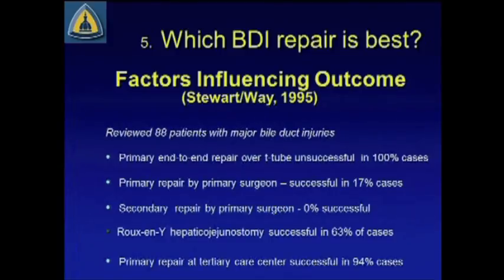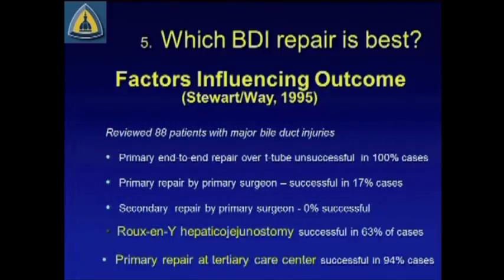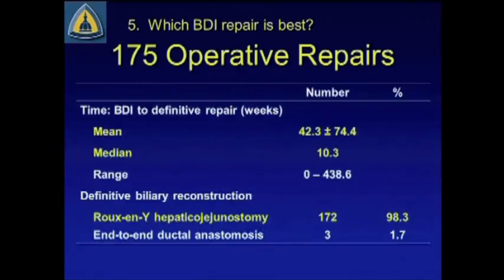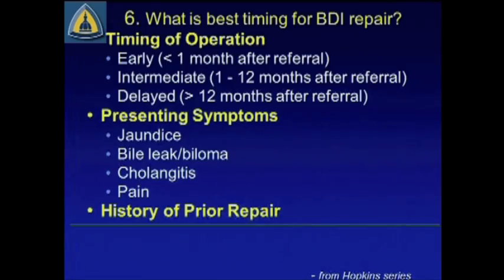Lesson number five: which bile duct injury repair is probably best? From Stewart and Way's work back in 1995 — an early review of 88 major bile duct injuries — the Roux-en-Y hepaticojejunostomy was probably the most successful, and referral to a tertiary care center was key for long-term best outcomes. Looking at more contemporary literature, a follow-up series of 200 patients published in Annals of Surgery in 2005 out of Hopkins again confirmed the winner was Roux-en-Y hepaticojejunostomy.